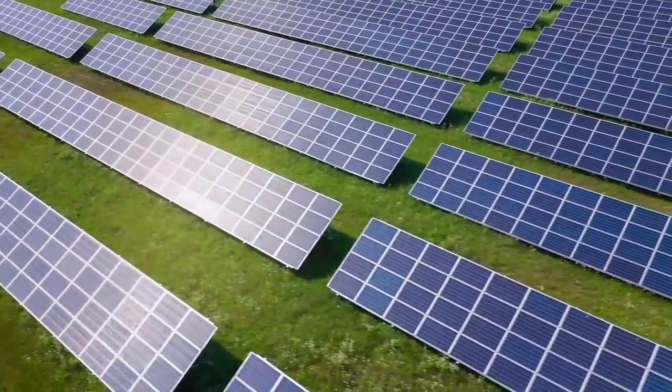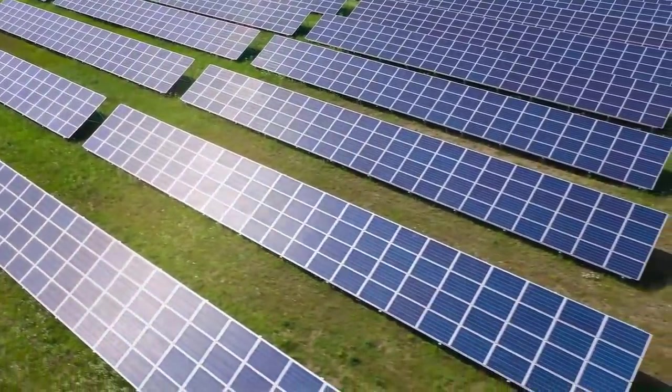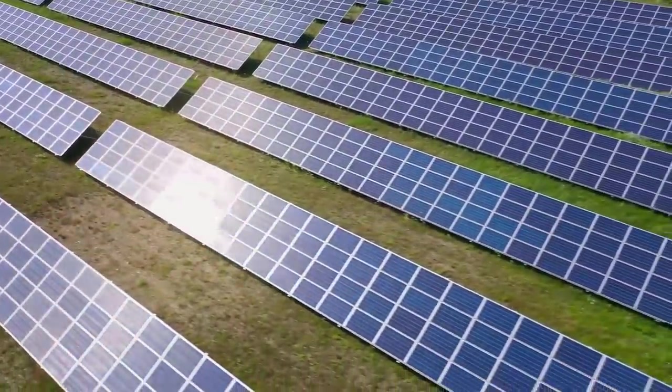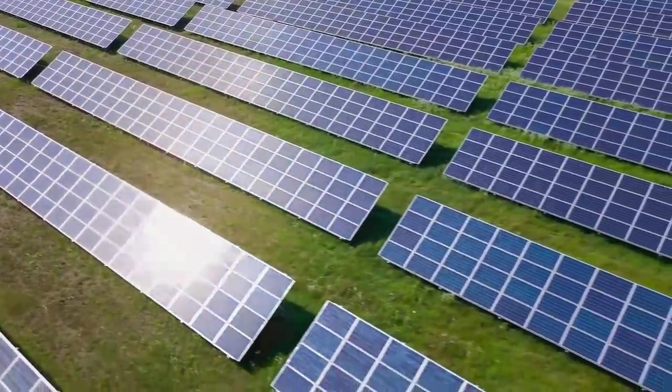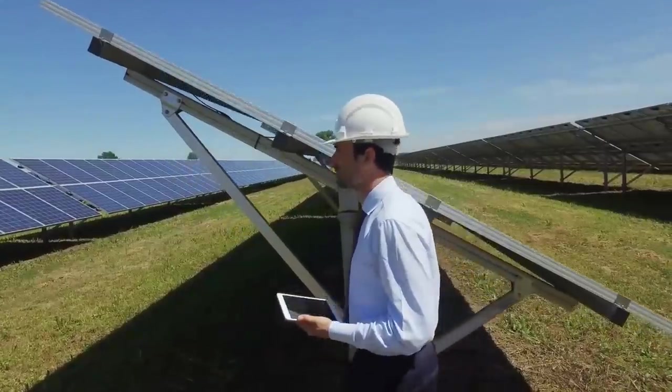Lastly, for today anyway, a mix of tungsten diselenide 2D sheets with black phosphorus sheets is giving us a polarized and photovoltaic material, meaning a solar panel light and flexible enough to be woven into your clothing to provide power to your devices or woven into pretty much anything else.